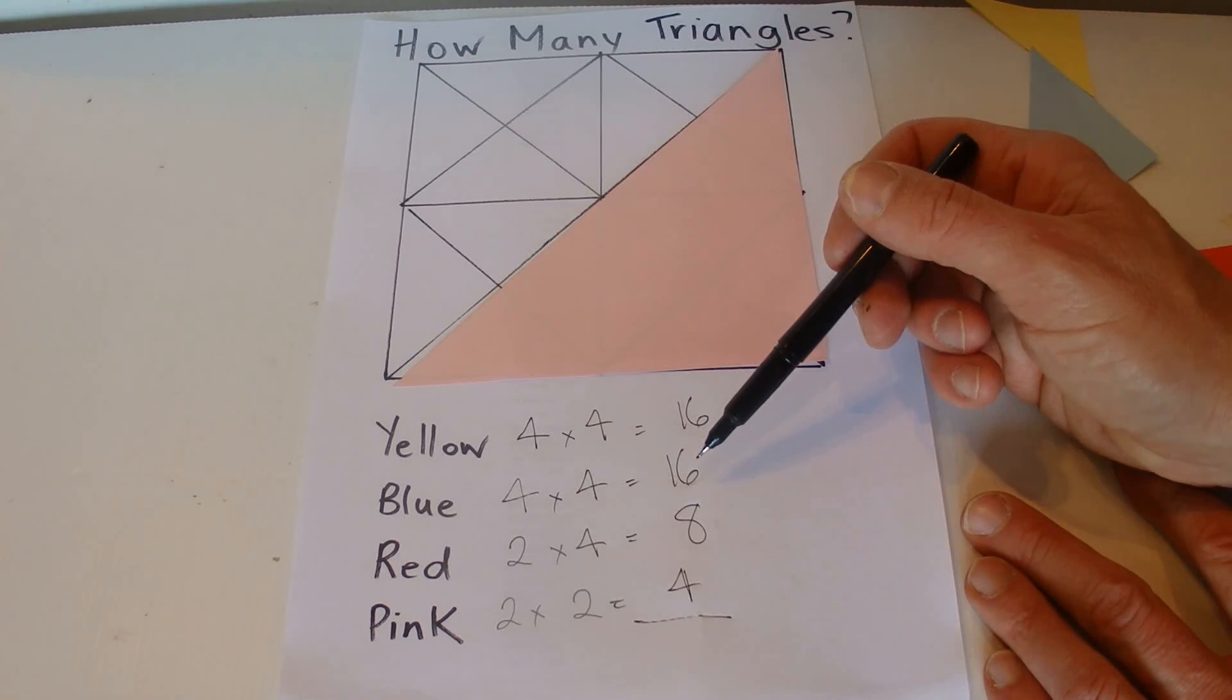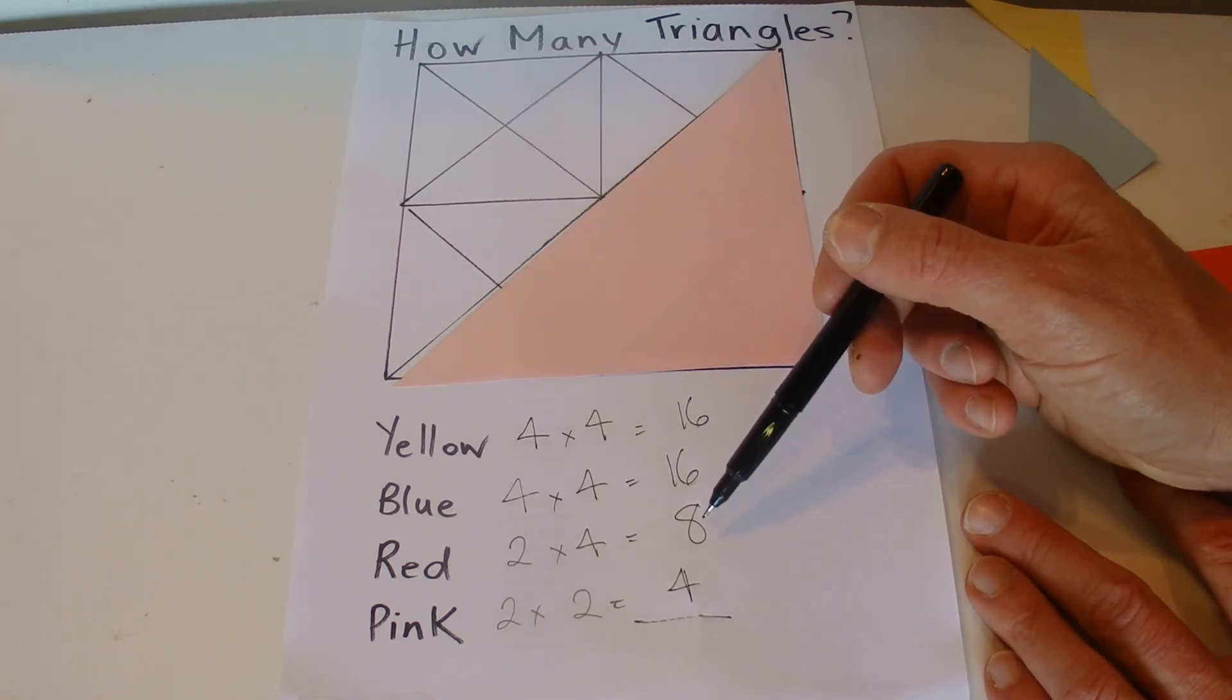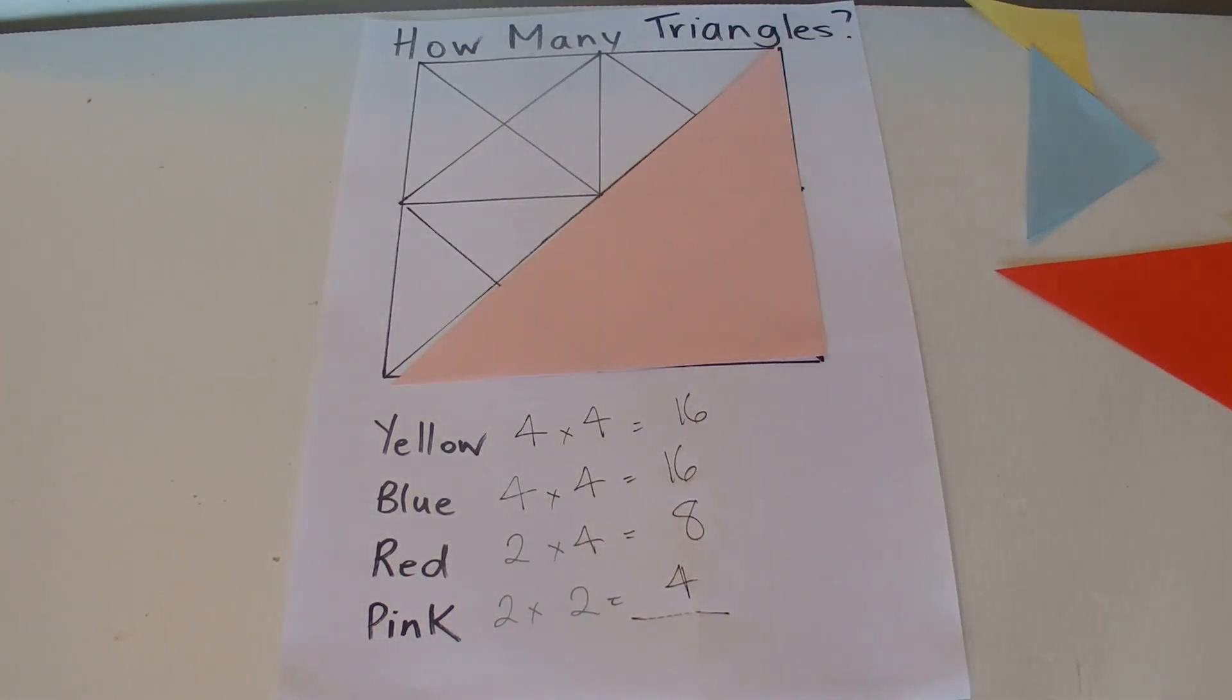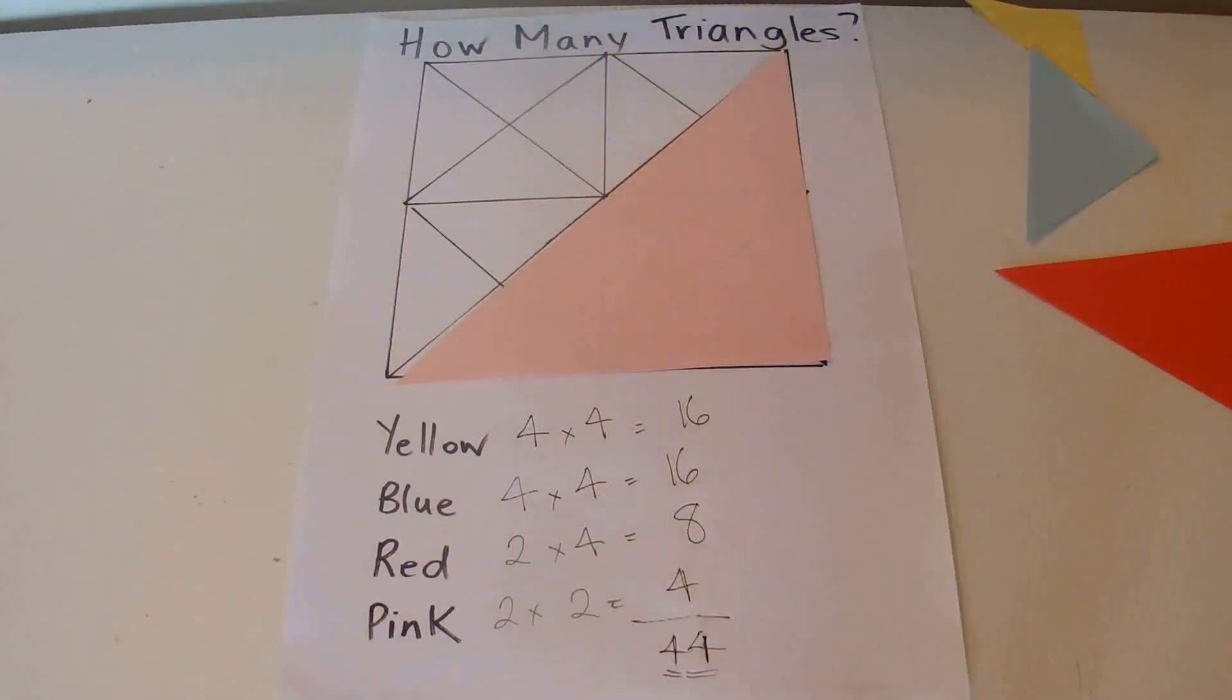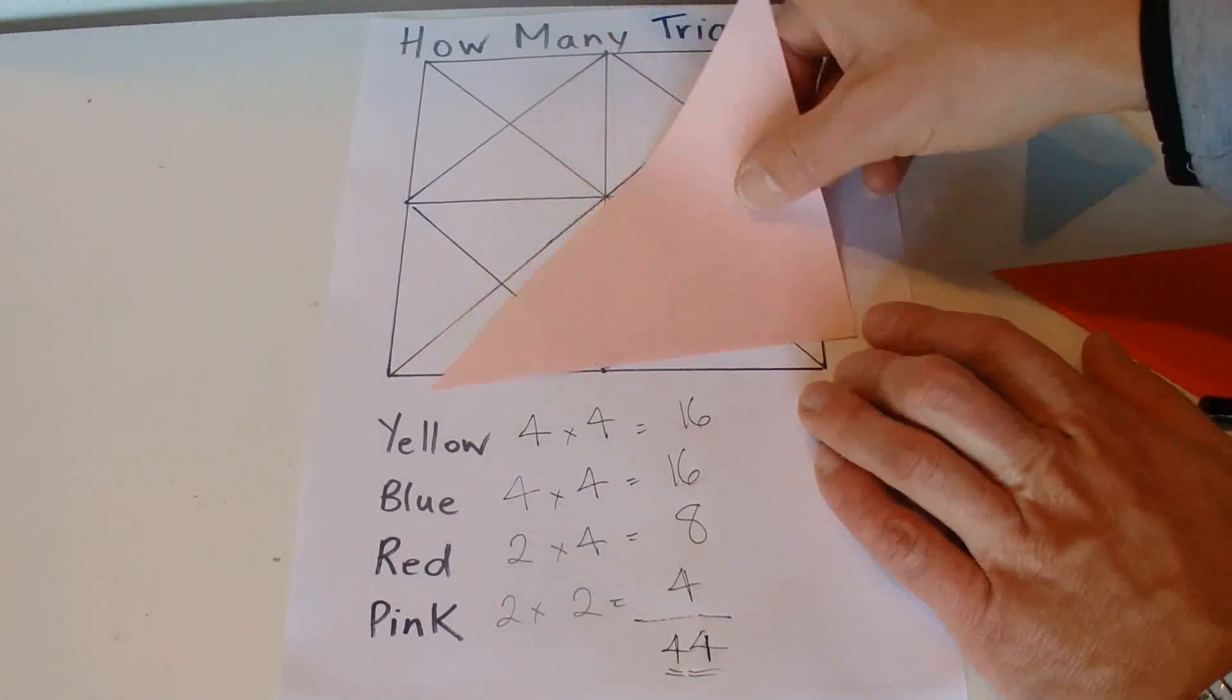So we've got 16 yellows, small yellow ones, we've got 16 blues, eight reds, and four of the pinks. And if you add that up, that gives you 44 triangles in total.